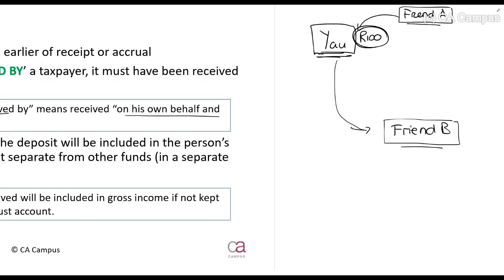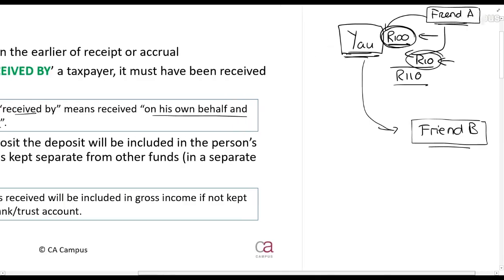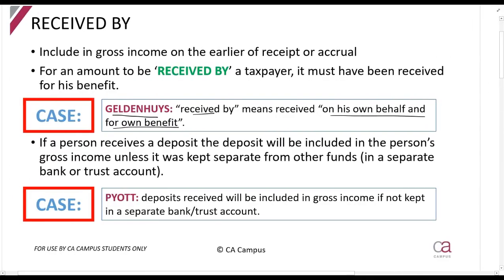Now, Friend A might say: 'You need to pay this 100 rands to Friend B, but because you're doing me a favour, I'm going to pay you 10 rands to do that.' Now you've received a total of 110 rands. Is the 100 rands for your own benefit? No. Is the 10 rands for your own benefit? Yes. So gross income in this case will be the 10 rands that Friend A paid you for your services rendered. That's what it means if you've received it for your own benefit.